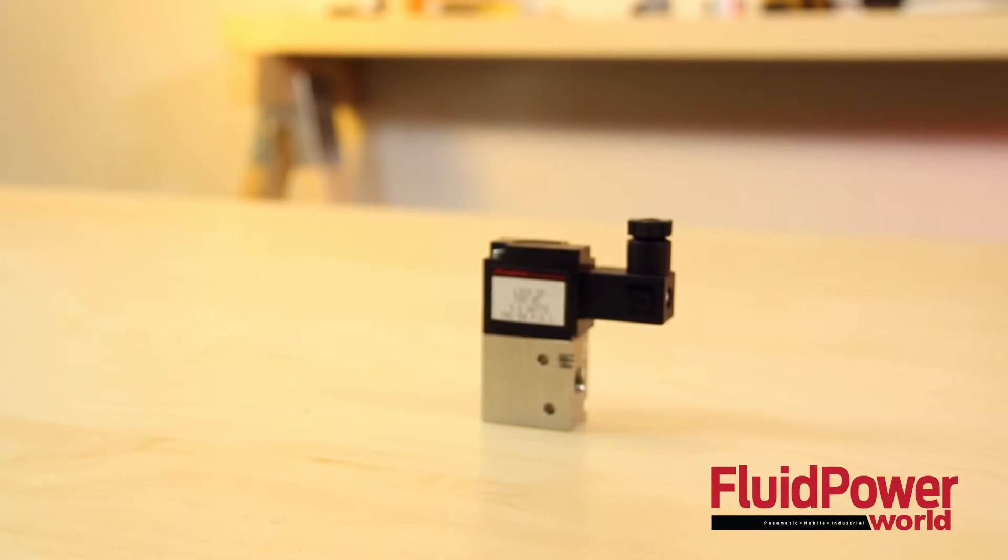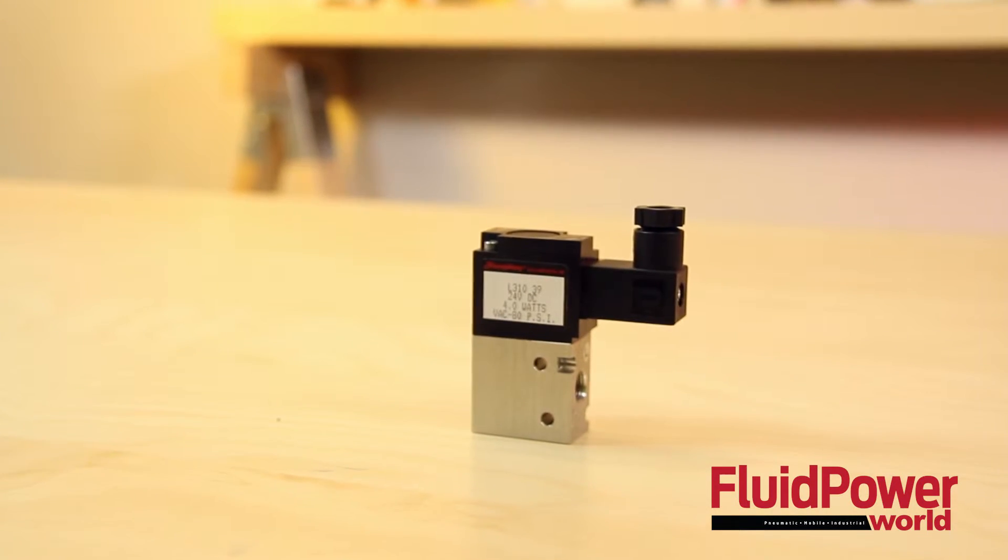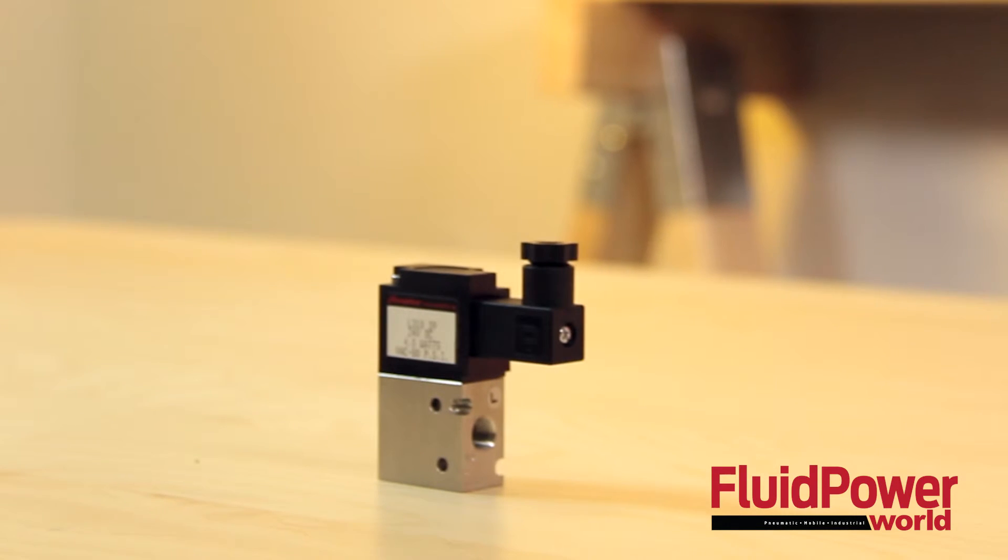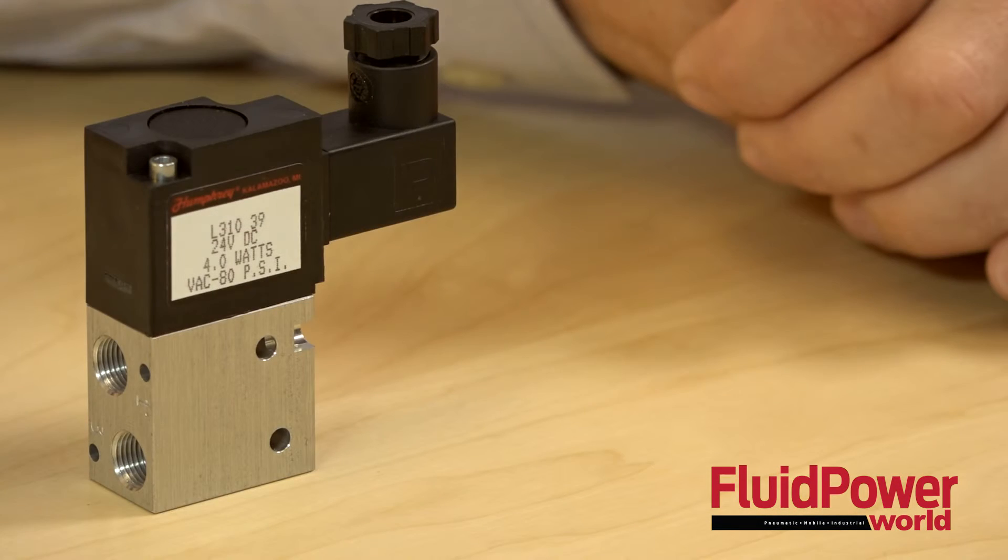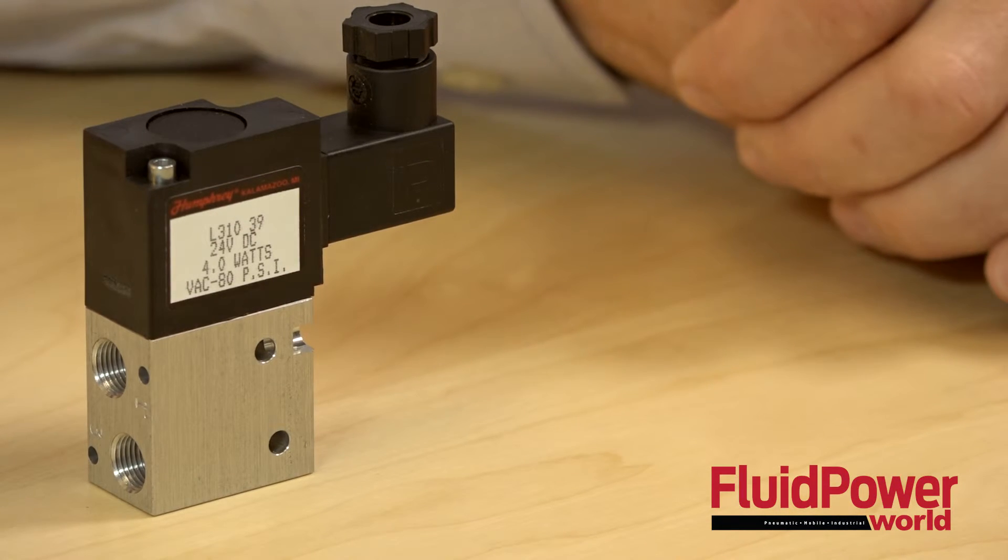The L310 is of a balanced construction and therefore it is suitable for vacuum or pressures up to 80 PSIG as normally closed or normally open functions. It can be used on the 410M manifold in conjunction with or without Humphrey's 310 and 410 series valves.